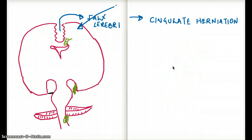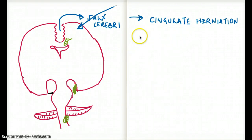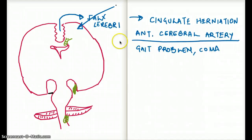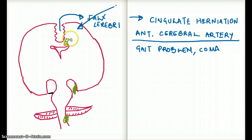This kind of herniation does not have a very profound effect on the brain stem. The artery affected due to cingulate gyrus herniation is the anterior cerebral artery. If our anterior cerebral artery is affected, we are going to see the patient having a gait problem, because the cingulate gyrus is part of the frontal lobe, which is associated with action of the lower limbs.